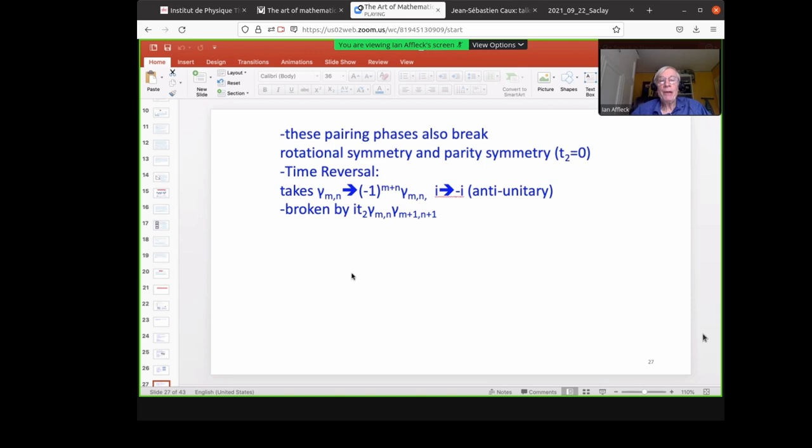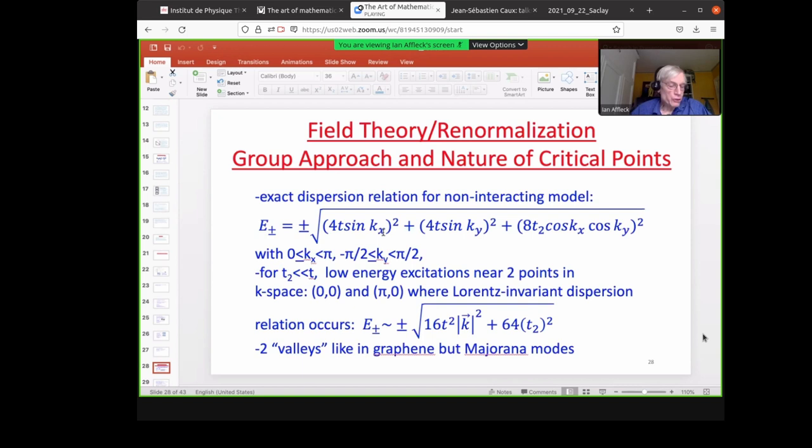So these pairing phases also break rotational symmetry and parity symmetry. For T2 equals zero, and they break time reversal, because time reversal takes gamma mn to minus one to the m plus n gamma mn, and i to minus i. This is broken by the T2 term. So we can also study this in the field theory. So we can calculate the exact dispersion relation for the non-interacting model. And this is what it looks like. And again, because we're dealing with Majorana fermions, and because we have this alternating sign, we can restrict the Brillouin zone to kx between zero and pi, and ky between minus pi over two and pi over two. So this is the dispersion relation. So for T2 much less than T, we have low energy excitations near the two points in k-space, zero zero, and pi zero, where we have Lorentz invariance.